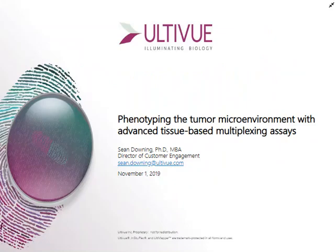Let me introduce our first speaker, Dr. Sean Downing. As the director of customer engagement at AltaVue, Dr. Downing oversees the services laboratory, providing custom assays to AltaVue customers and the VAL team. Sean has implemented pathology workflows at several companies spanning both proteomics and genomics. Prior to AltaVue, he established and ran Perkin-Elmer's CRO laboratory, offering a menu of TSA-based staining services. Previously, Sean was one of the principal inventors of the first-to-market pan-cancer NGS test at Foundation Medicine. He was a post-doc and junior faculty member at Harvard Medical School with appointments at Dana-Farber Cancer Institute and Boston Children's Hospital.